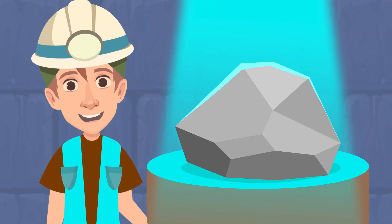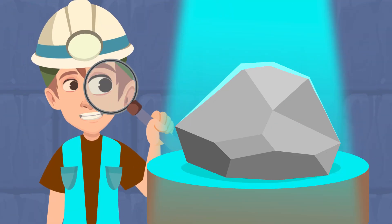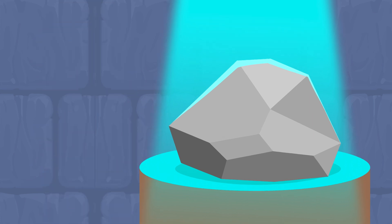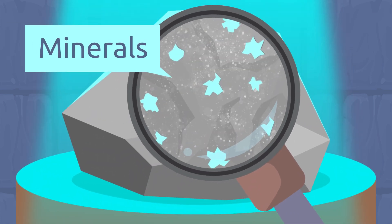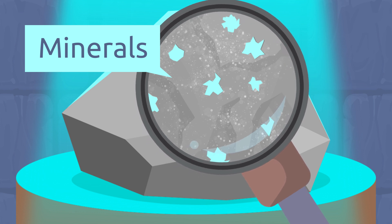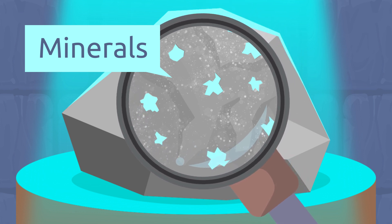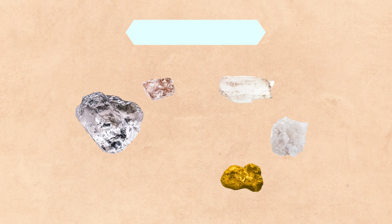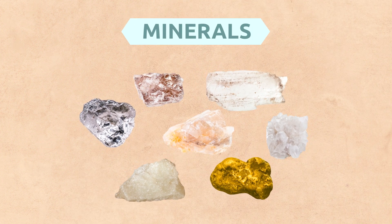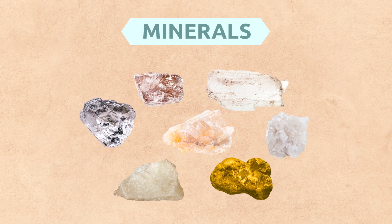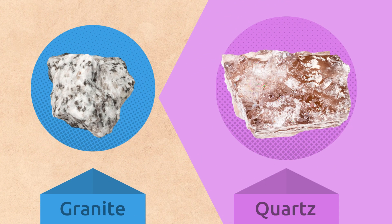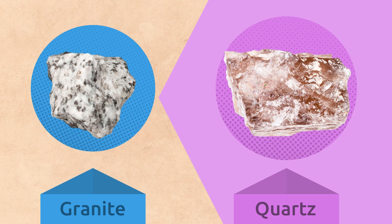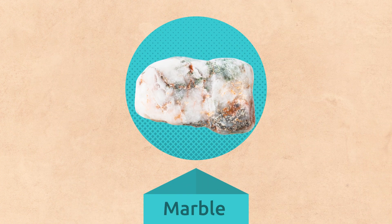We're going to use this magnifying glass to observe this rock. Can you see how it's formed by different elements? That's right, friends — those elements are called minerals, and all rocks are made up of them. There are many types of minerals.